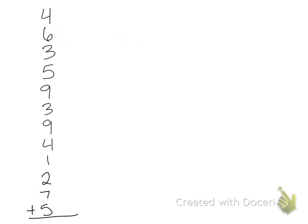So four plus six is ten. Ten plus three is thirteen. Thirteen plus five is eighteen. Eighteen plus nine is twenty-seven.